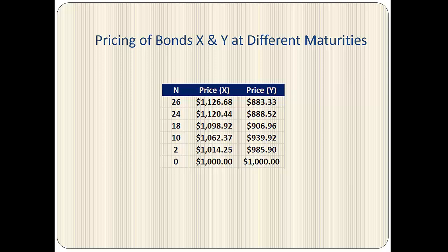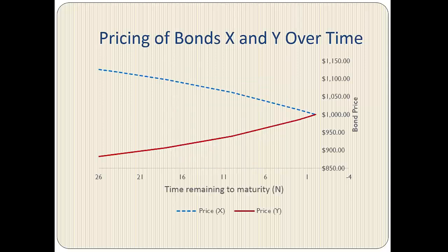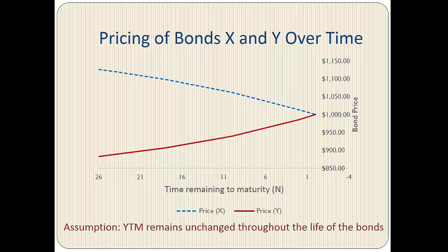We can then create a comparison chart for both Bond X and Bond Y prices at the given maturities, and plot the data to visualize the results. As coupon payments are made over time, the premium on the premium bond gets lower and lower, and the price falls until it reaches par value at maturity. Similarly, the discount on the discount bond gets smaller and smaller, and the price rises until it reaches par value at maturity. The yield to maturity remains constant throughout the life of the bonds.